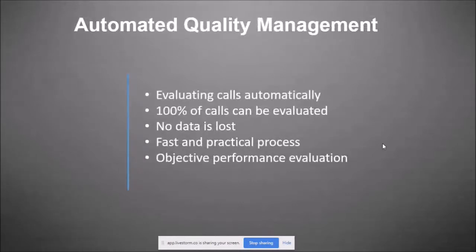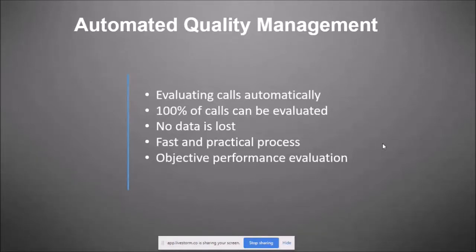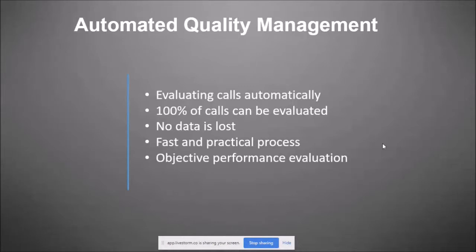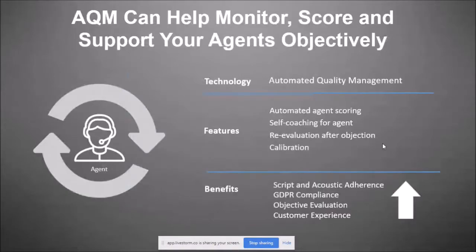With automated QM, all of the calls you select are going to be evaluated automatically. The tool creates scorecards on your behalf. You can include 100% of calls or filter a subset - as a result, your data is not going to be lost. This will take probably fractions of a minute depending on the contact center's size. It's going to be a totally objective performance evaluation because you're creating a rule-based engine, and the machine does 100% thorough evaluations relying on those rules.